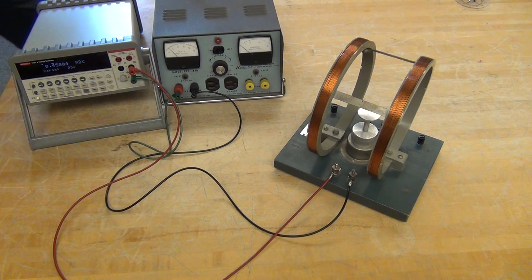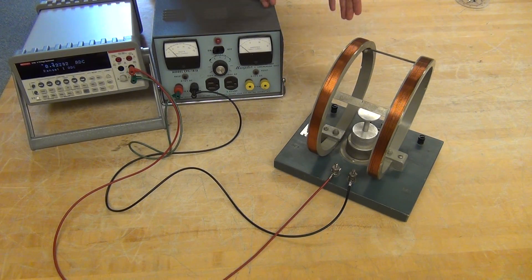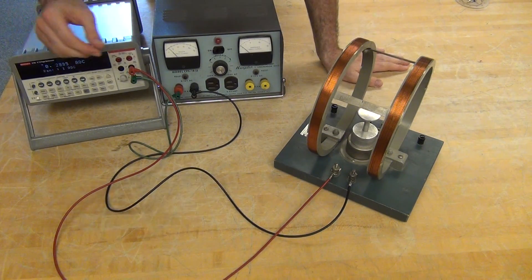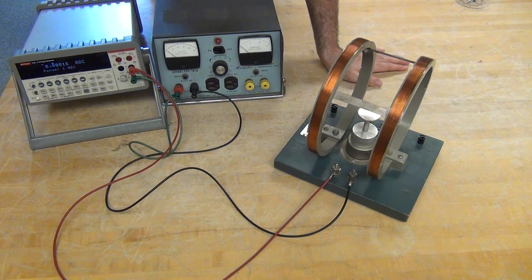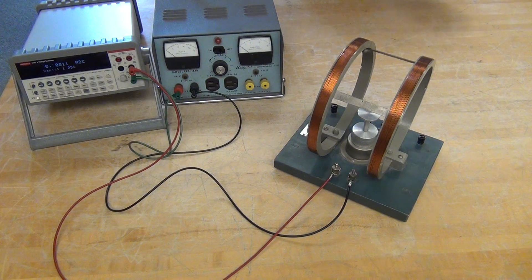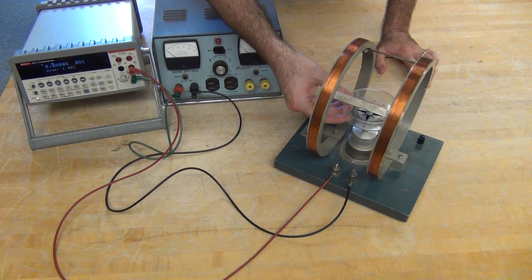Next, we'll use the coil to affect the magnet so that we can measure how much of an effect the Earth's magnetic field has. We'll turn that all the way down, turn it off, and put our compass inside the coil.